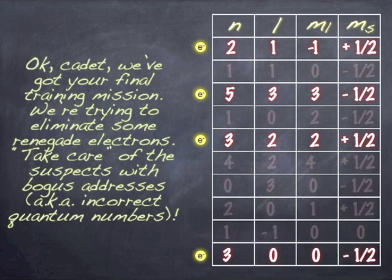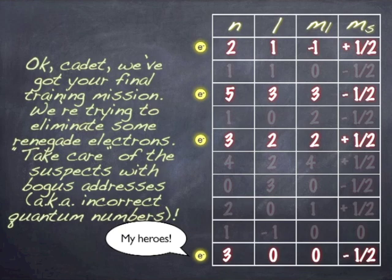And the last one, he's good. Exactly right. You can have an N of 3. And if N is 3, L can certainly be 0. M sub L can certainly be 0. And you can have a minus 1 half spin.